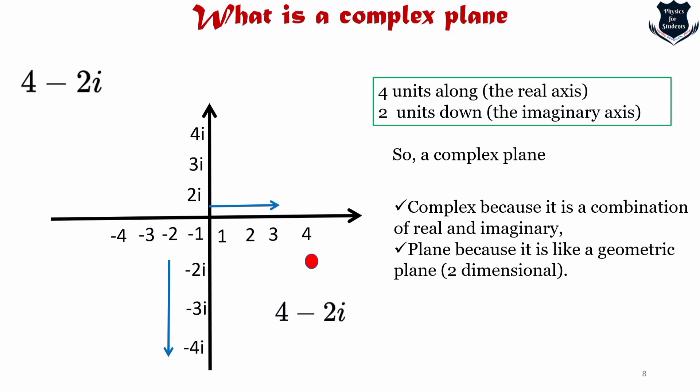It is called the complex plane for two reasons: it is complex because of the combination of real and imaginary parts, and it is called a plane because it is like a geometrical plane. You can take further numbers and keep practicing so that the concept becomes clear.